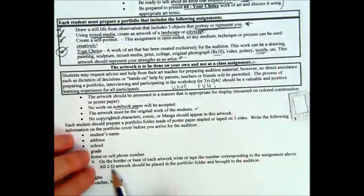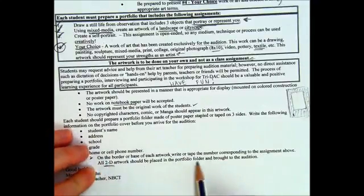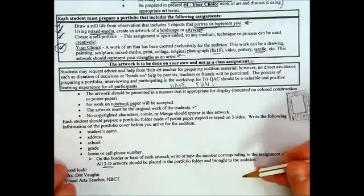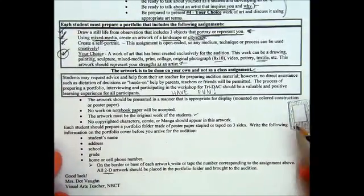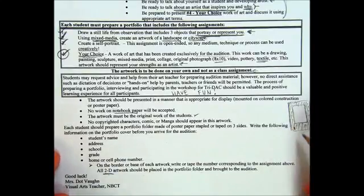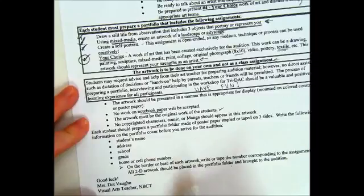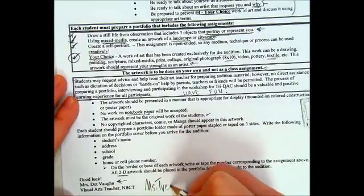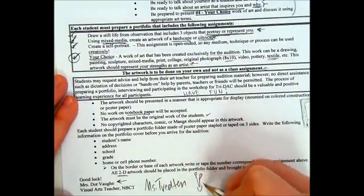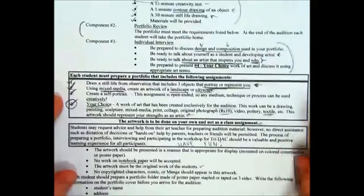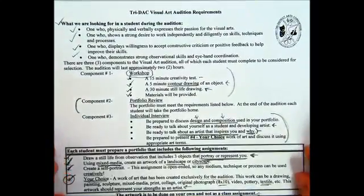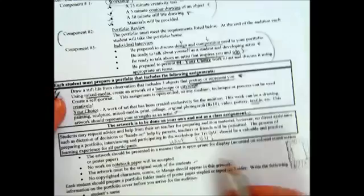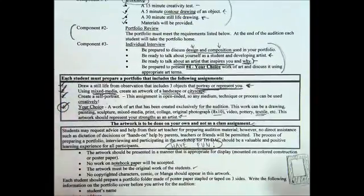All 2D flat work should go in the portfolio folder. For three-dimensional work like pottery, you can put the number on the base or in the box you're carrying it in. Each student should prepare a portfolio folder made of poster paper stapled or taped on three sides — fold a big piece of poster paper in half, staple or tape along the edge so it's open at the top to put all your work inside. Write your information on the outside with a Sharpie before you arrive. Good luck from Ms. Dot Vaughn and Ms. Tweeden. If anything comes up and there's any way I can help, come by and talk to me, call, or email. I'm proud of you — don't forget to have fun during the whole process!